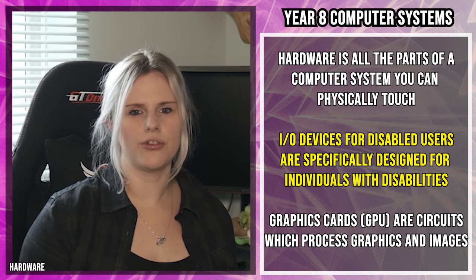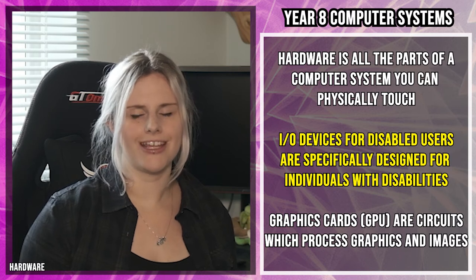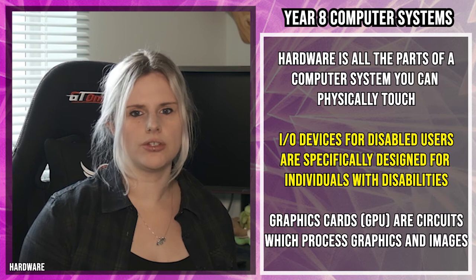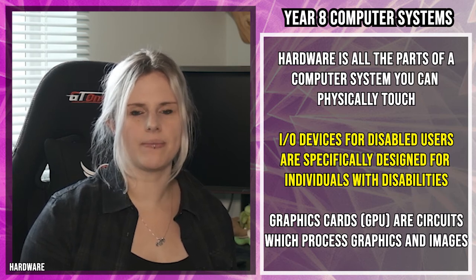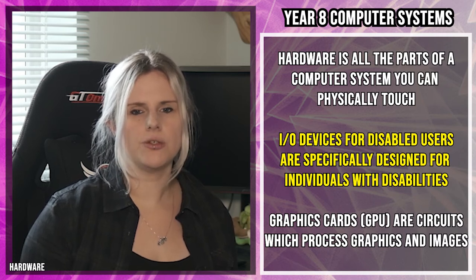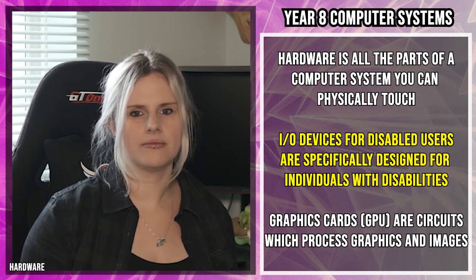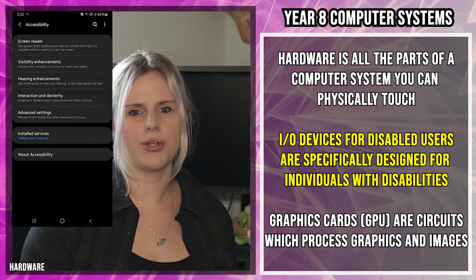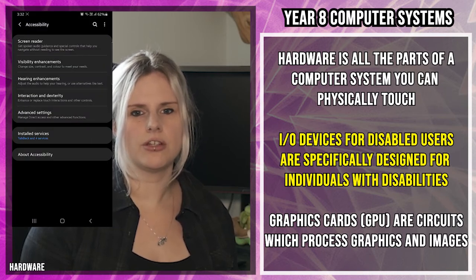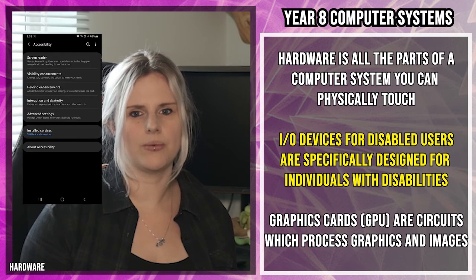Software is all the apps and programs that run on the computer system. For disabled users, especially blind people, software such as speech-to-text and text-to-speech is really useful. Speech-to-text takes what you are saying and types it in for you — if you've got a device like Google Home or Alexa, this works in pretty much the same way. Text-to-speech does the opposite: it reads out the words on the computer for you, so you know exactly what you're clicking on or reading.